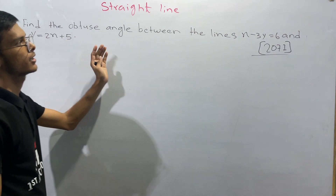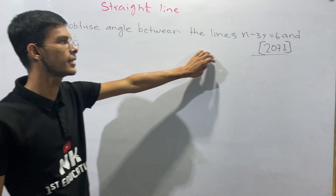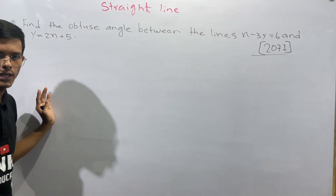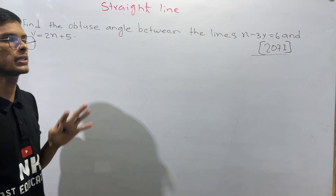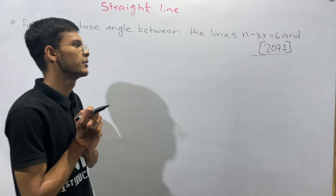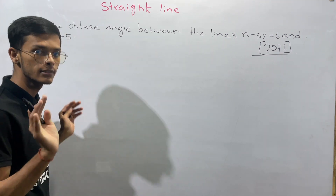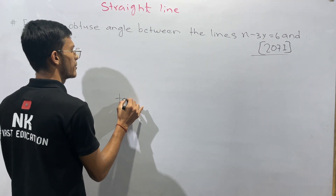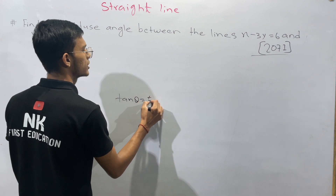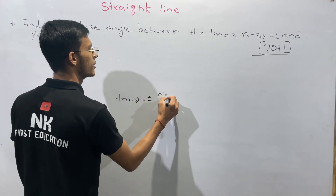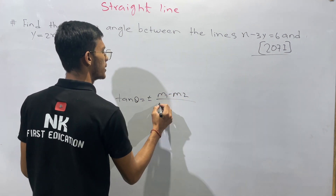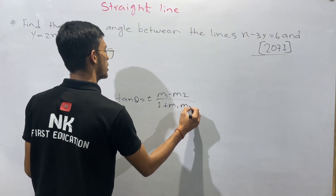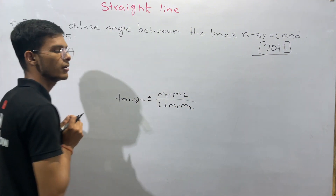Find the obtuse angle between the lines. This is the formula: tan theta is equal to m1 minus m2 divided by 1 plus m1 into m2.